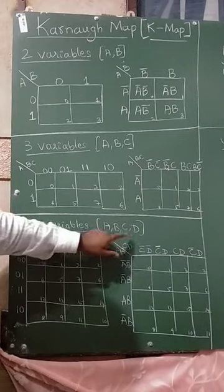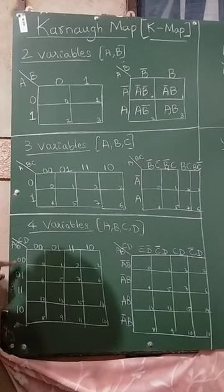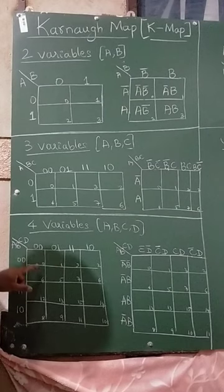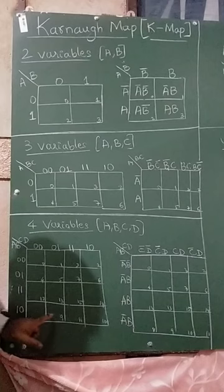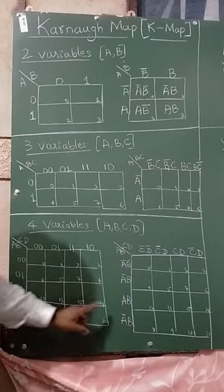In 4 variables: A, B, C, D. You should write 0, 0, 0, 1, 1, 1, 1, 0. Same thing here. In the cells: 0, 1, 2, 3, 4, 5, 6, 7, 8, 9, 10, 11, 12, 13, 14, 15.